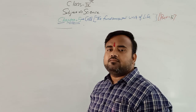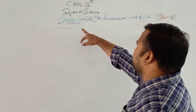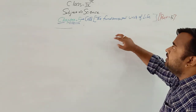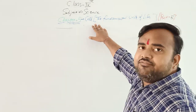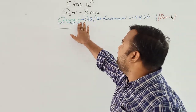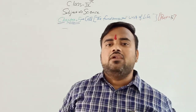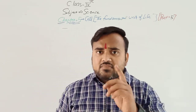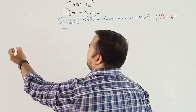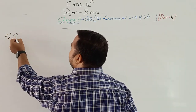Good morning dear students. Today we will continue chapter 5, part 5. Cell is the fundamental unit of life. In lecture number 4 we have seen up to the cell wall. Now we will see what is cell membrane. The second chapter of cell is cell membrane.